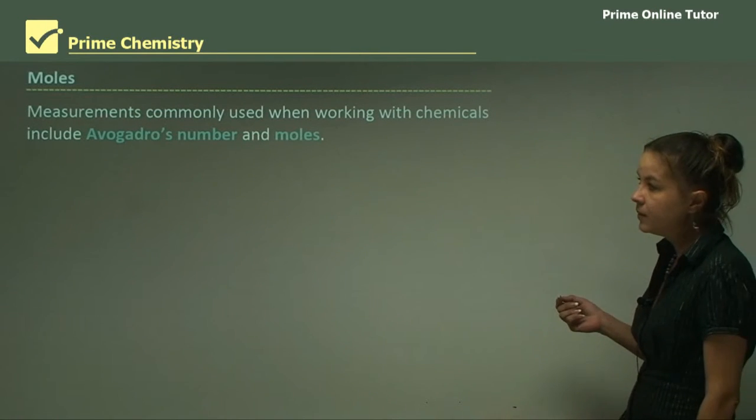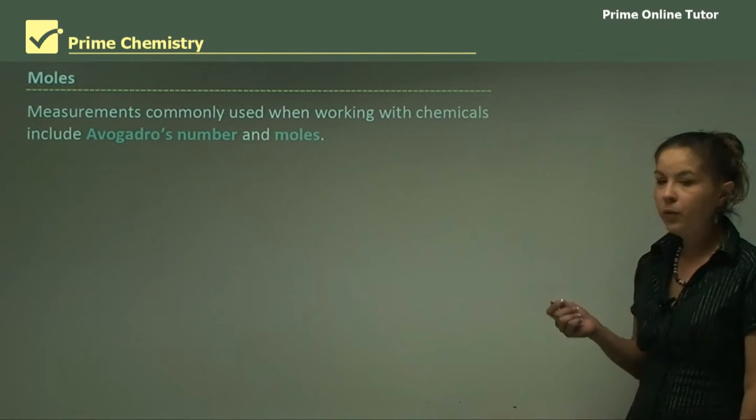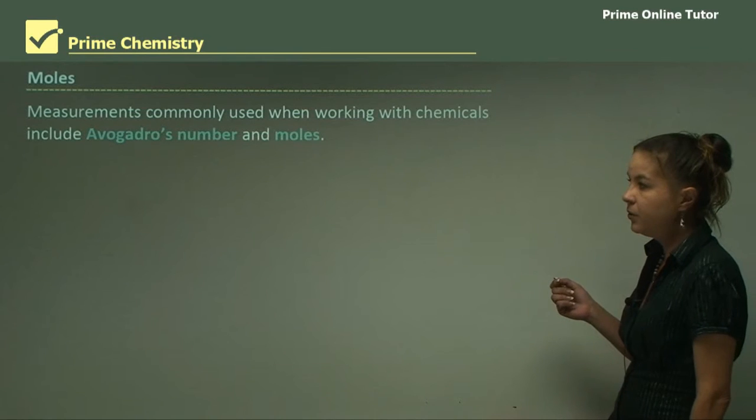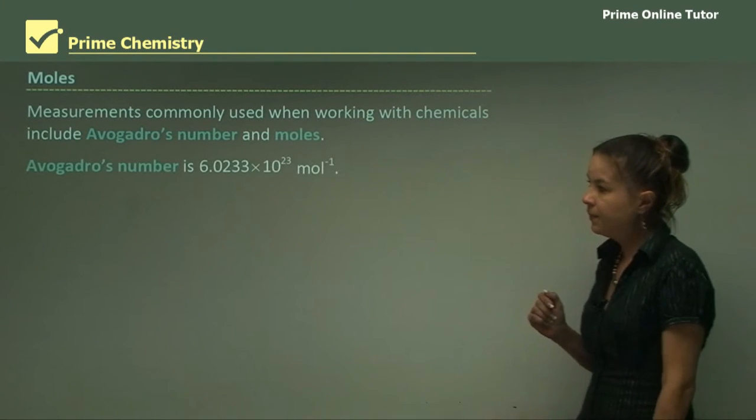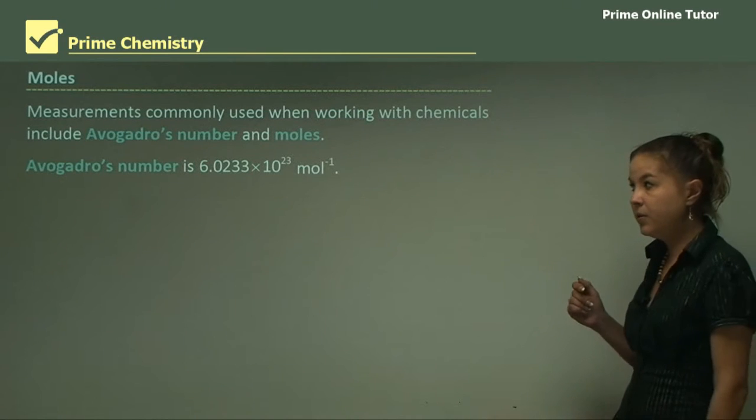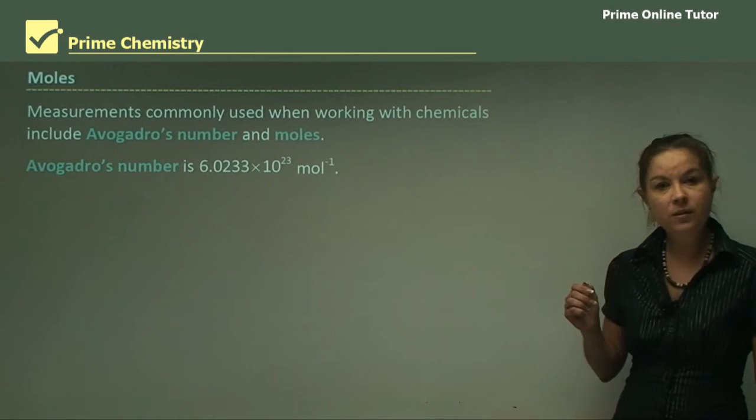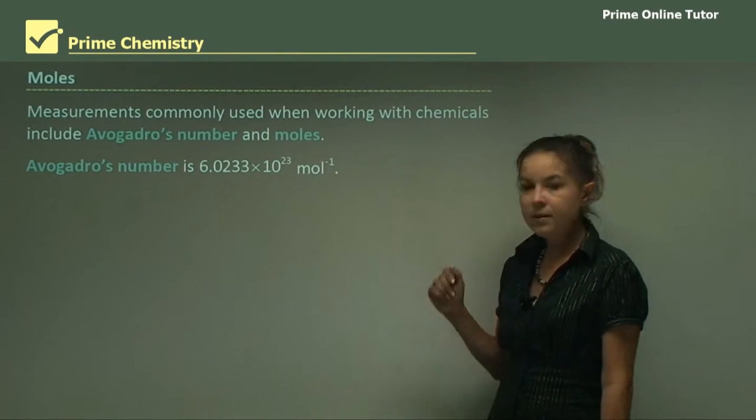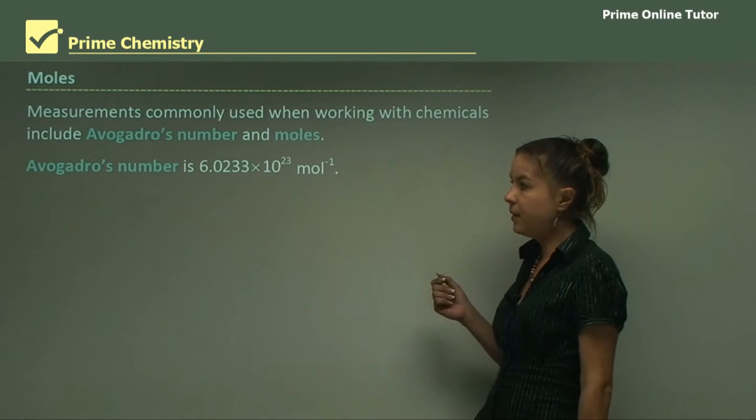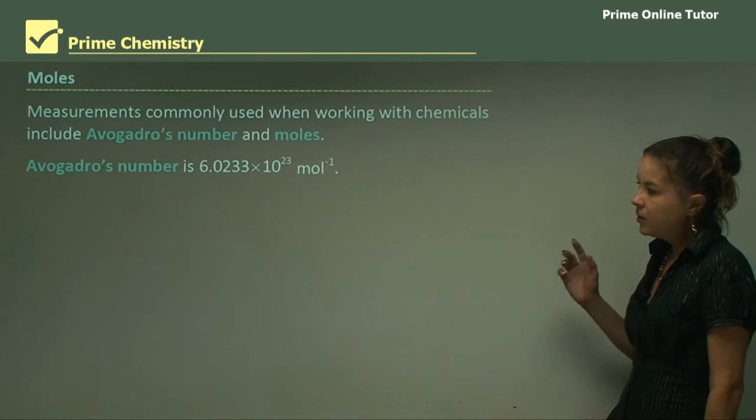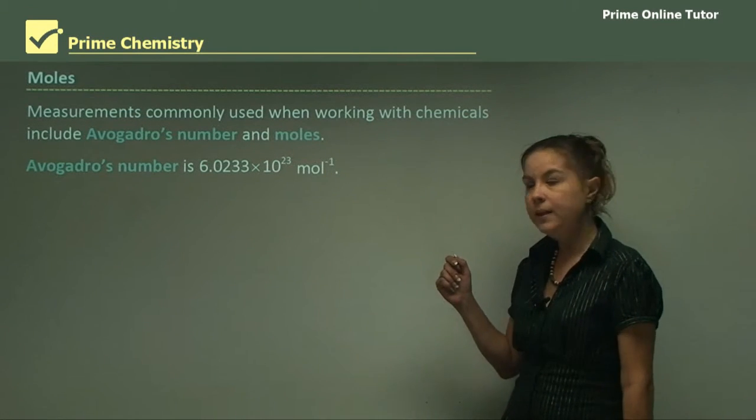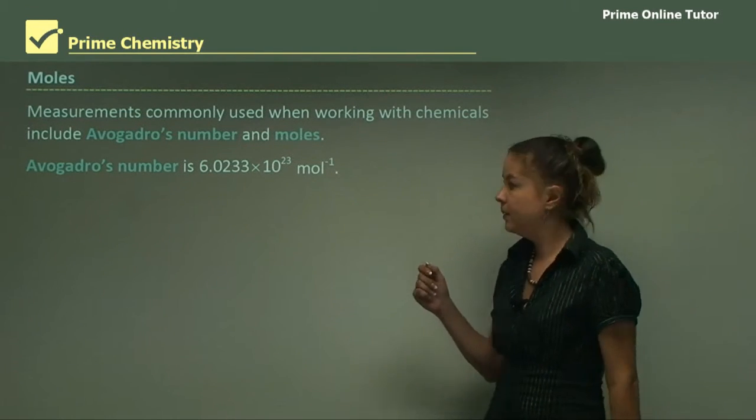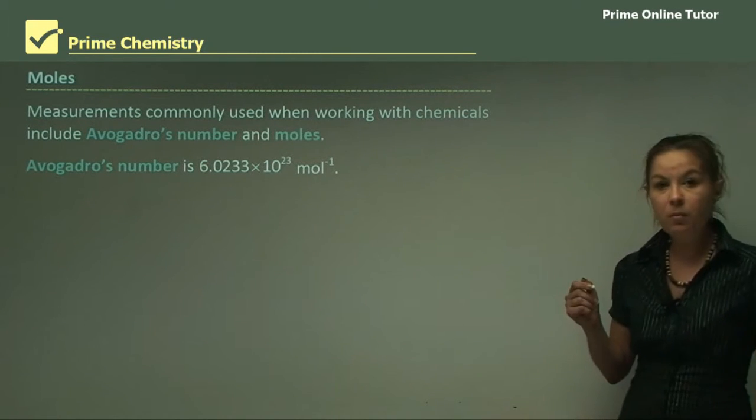Now looking at moles, measurements commonly used when working with chemicals include Avogadro's number and moles. So firstly looking at Avogadro's number. This is a constant, and you'll find that you'll get this number on data sheets if you have to do calculations. So just be aware of it, but you don't have to remember it. It's 6.0233 times 10 to the 23, and that's in molecules per mole.